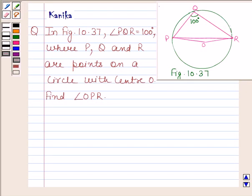Hi and welcome to our session. Let us discuss the following question. The question says in figure 10.37, angle PQR is equal to 100 degrees, where P, Q, and R are points on a circle with center O. Find angle OPR.